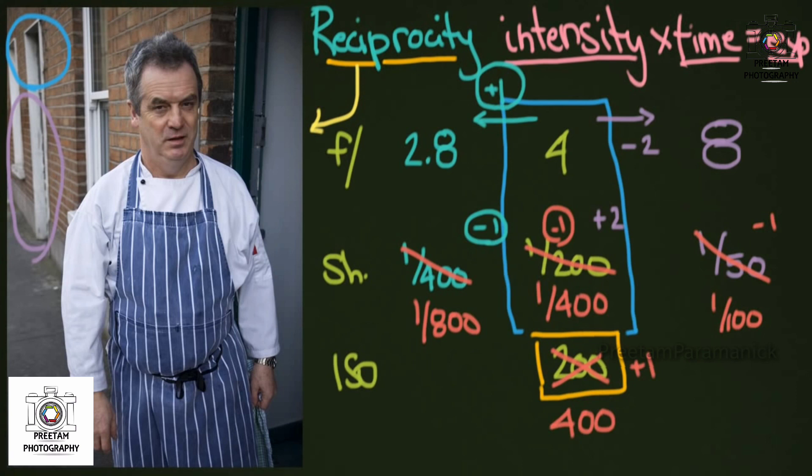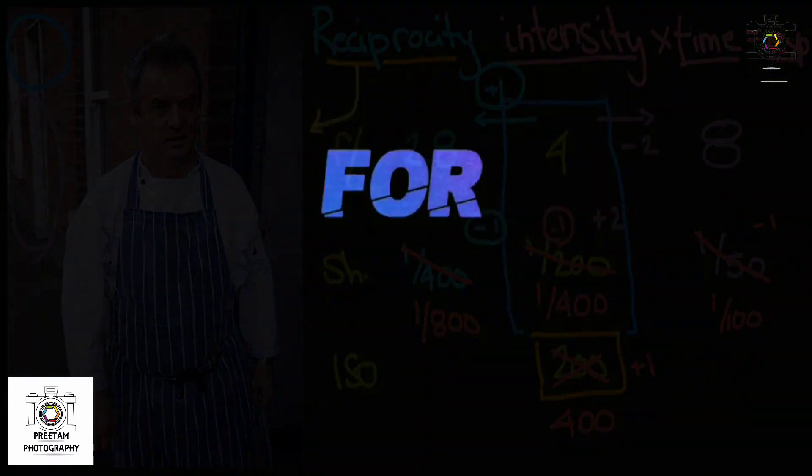And basically this is all photography is. It's this little set of math. And I'm going to go through and show you the stops of light in a different video. You might have even already seen that video. But that will give you a better idea of how all this works. So basically this is the idea of reciprocity. You move one direction with one setting and then you have to move in the opposite direction with the other setting. So just remember that and you'll be good to go.